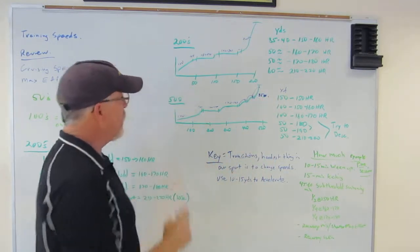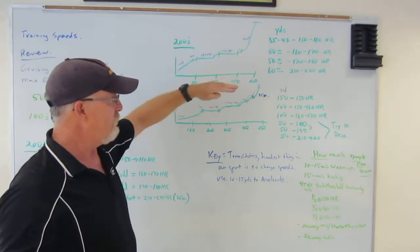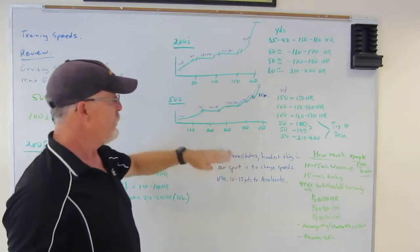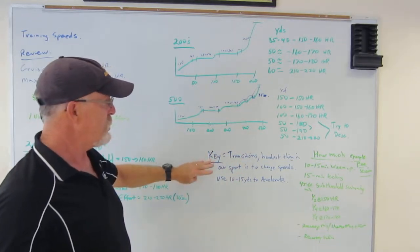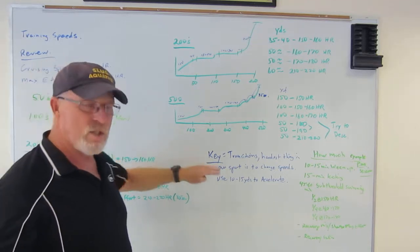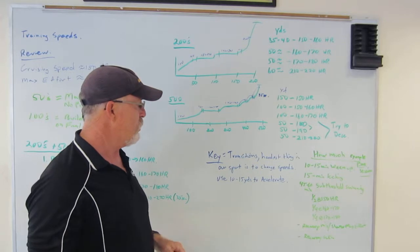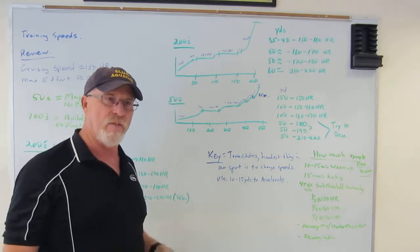So what we're looking at in these middle distance events is we're looking at different training levels, different heart rate levels, different effort levels, as well as transitions. And let me just say in the beginning that transitions are the hardest thing that we can do in our sport. Changing speeds to accelerate takes a lot of effort.